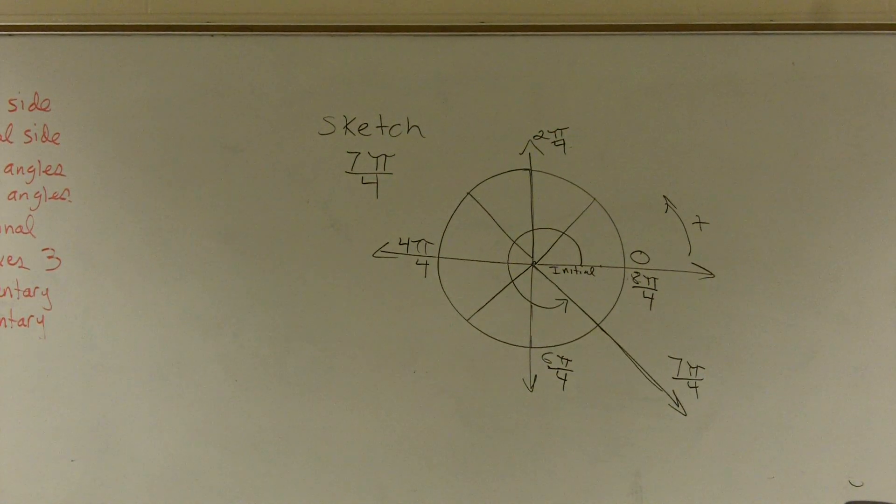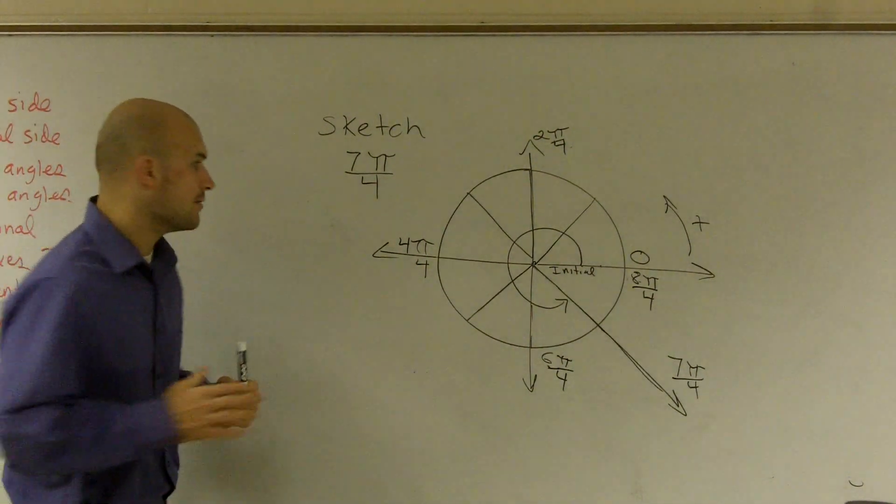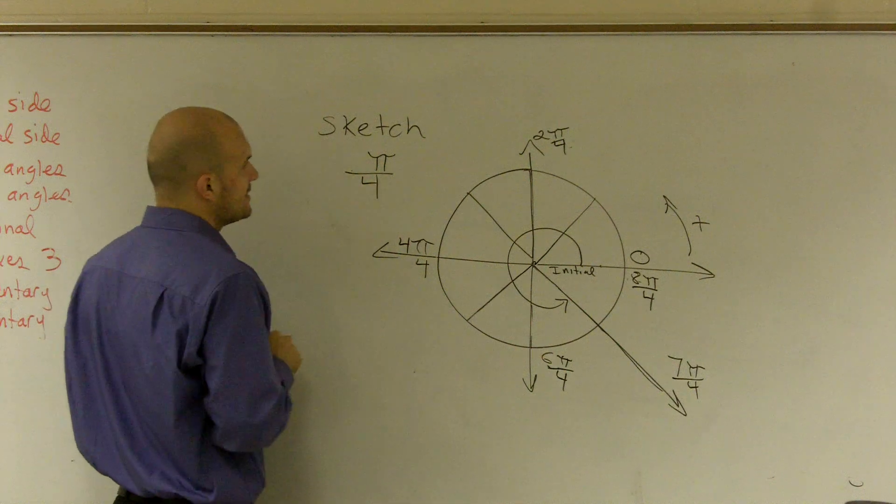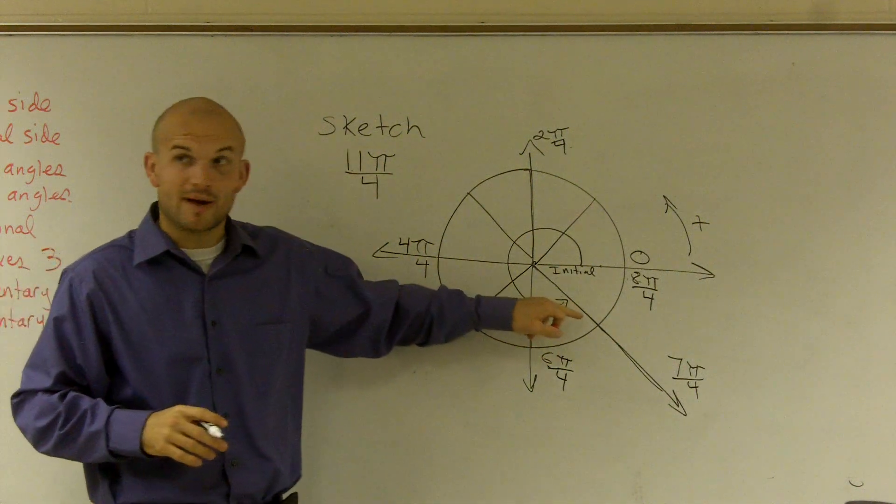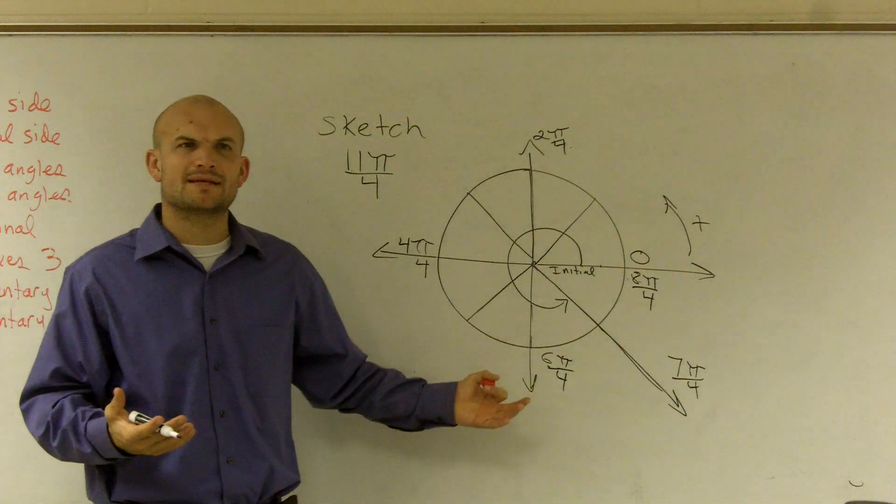And let's say, ladies and gentlemen, so this is 7π over 4, right? Well, I want to go over one more thing with you. Let's say I made this 11π over 4, OK? So you guys have 7π over 4. And then if I say, well, what would be 11π over 4?